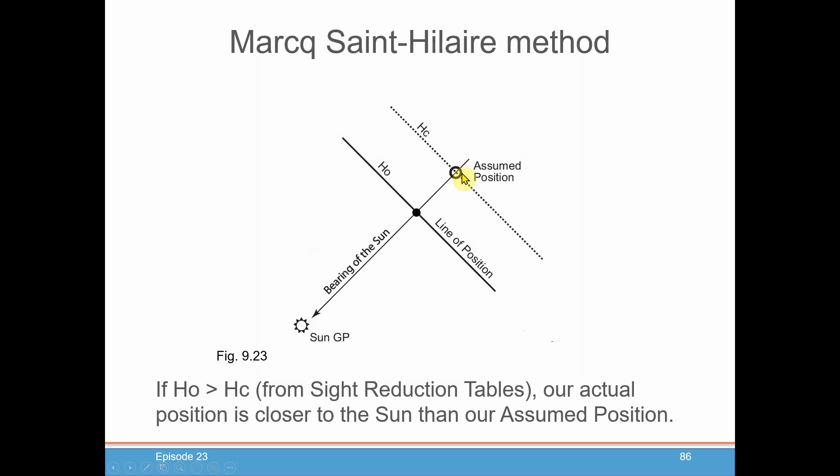When we did the calculation from our assumed position, we got an HC which put us somewhere over here. But when we actually measured it with our sextant, it turned out to be that we were higher. That means we have to move our line of position closer to the sun than our assumed position. That's if HO is greater than HC.